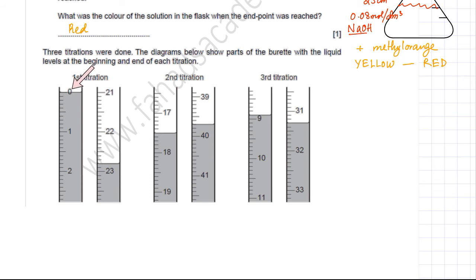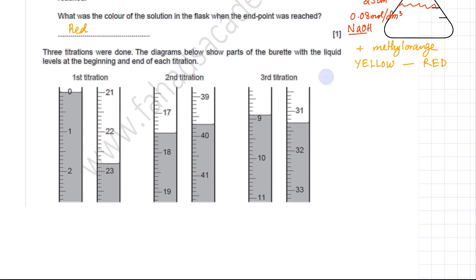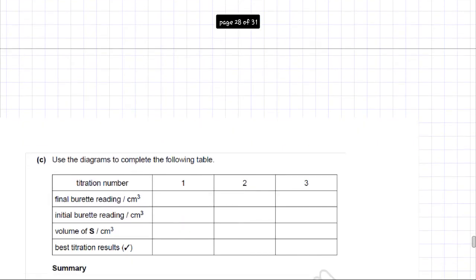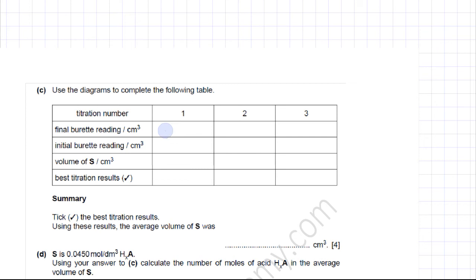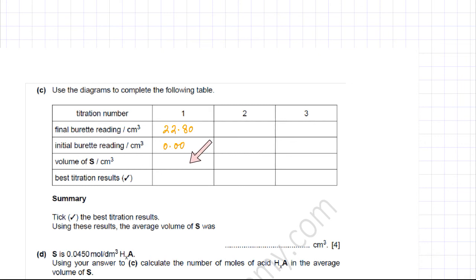For the first titration, the burette was initially at 0.00 cm³ and the final reading was 22.80 cm³. Remember to record burette readings to two decimal places, as that is the accuracy of the apparatus. So the volume of acid S added in the first titration is 22.80 cm³.